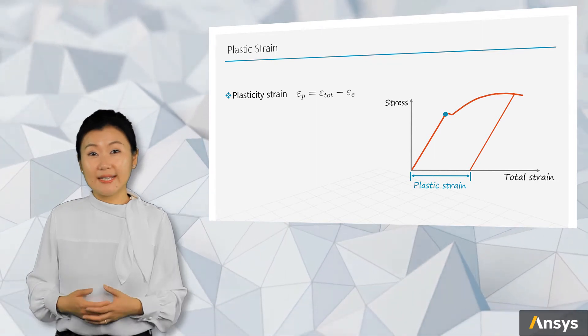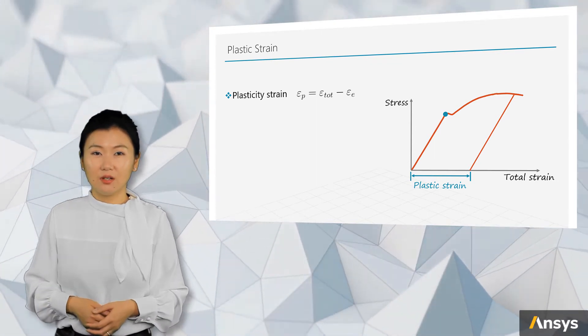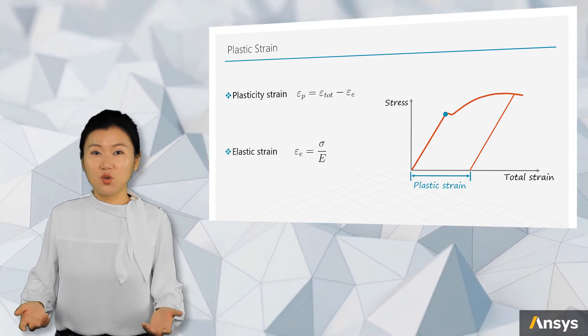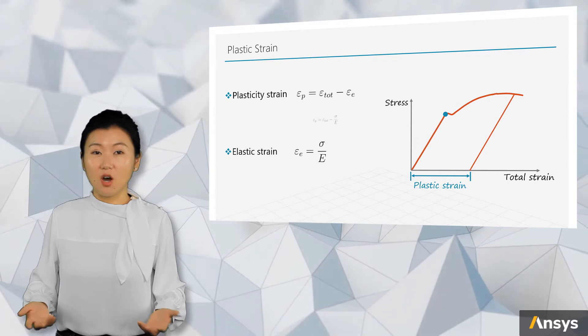We know that the total strain is given from the testing data. But how about the elastic strain? We can find elastic strain from stress and the Young's modulus. This way, plastic strain is also known to us.